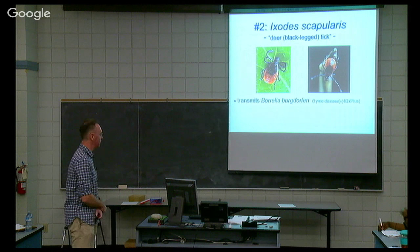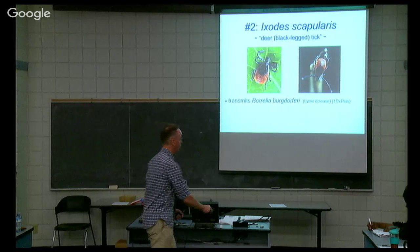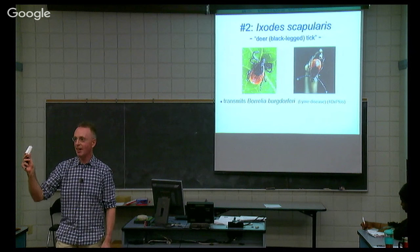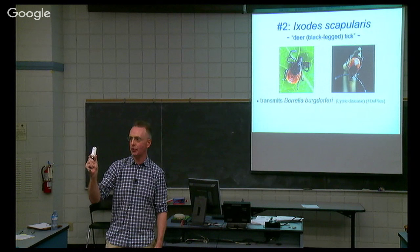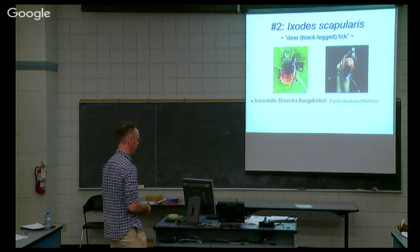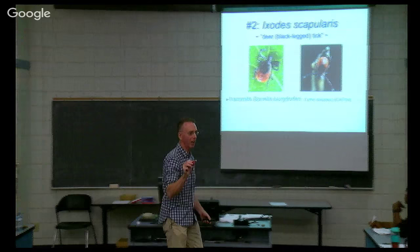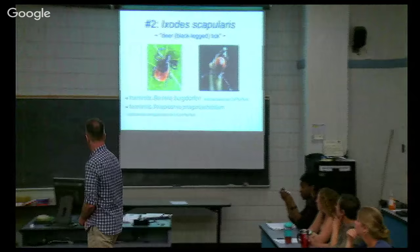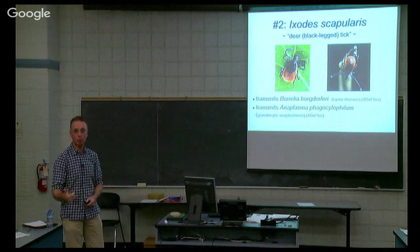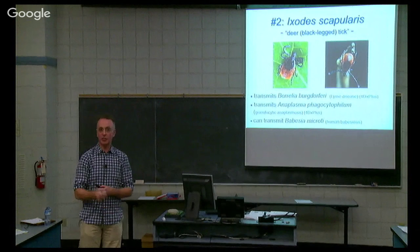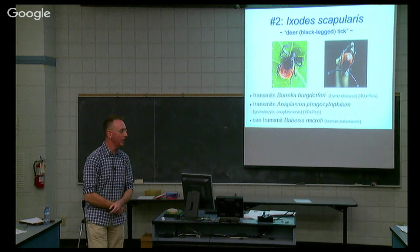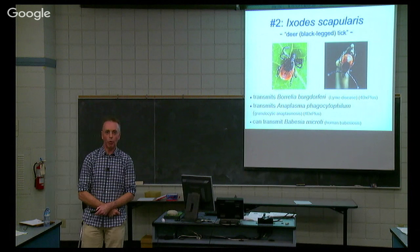Why is Ixodes scapularis of primary concern? For three reasons. Number one, it transmits the agent that causes Lyme disease. It also transmits Anaplasma phagocytophilum, which causes disease in people and in dogs. And it also transmits a Babesia species associated with disease in people, but not dogs. Prior to the mid-1990s, we effectively didn't have it anywhere in Canada, and as you'll see in a minute, that's changed dramatically.